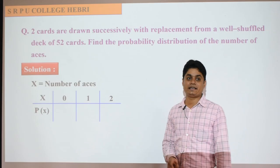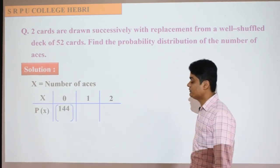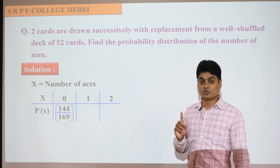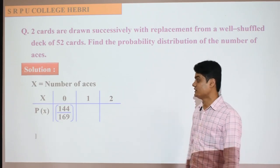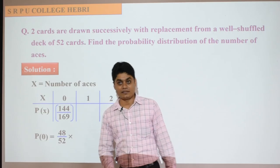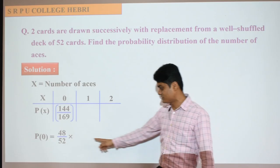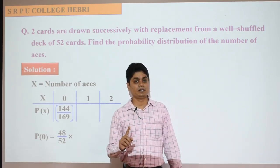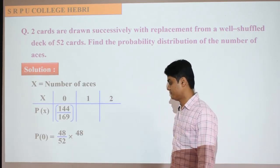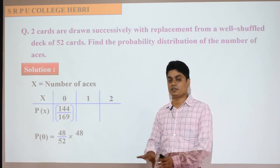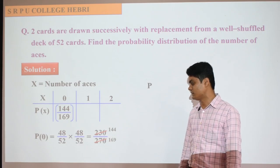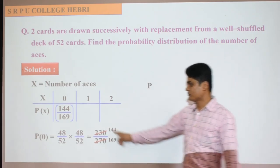What is the probability of getting no aces when selecting two cards? Out of 52 cards, 4 cards are aces. So the first card is not an ace: 48 out of 52. Since it is with replacement, we put the card back, so again 48 out of 52 for the second card. So P(X=0) = 48/52 × 48/52, which simplifies to 144/169.